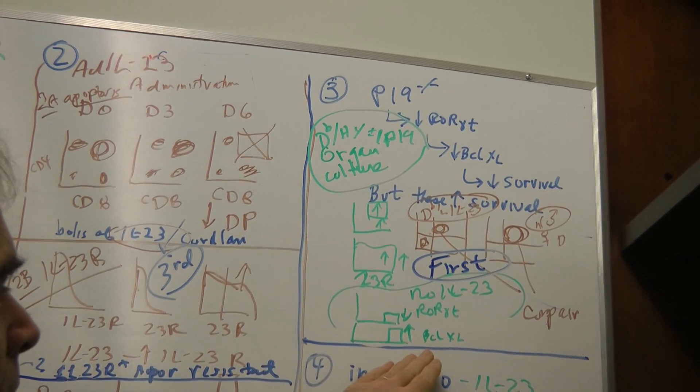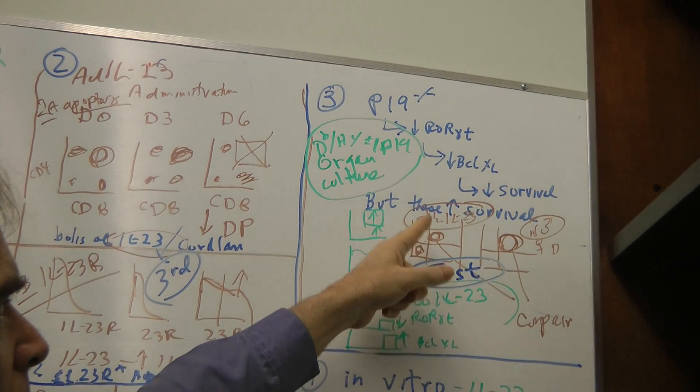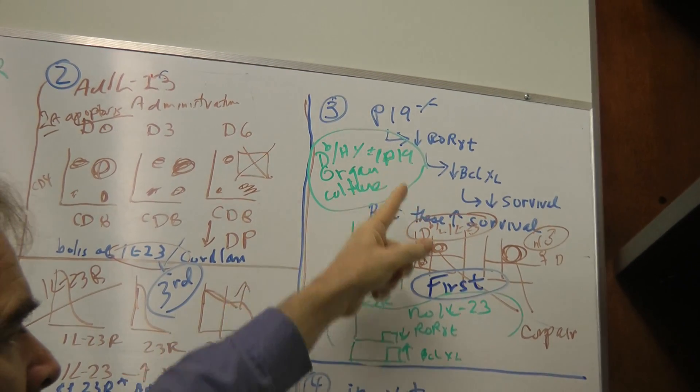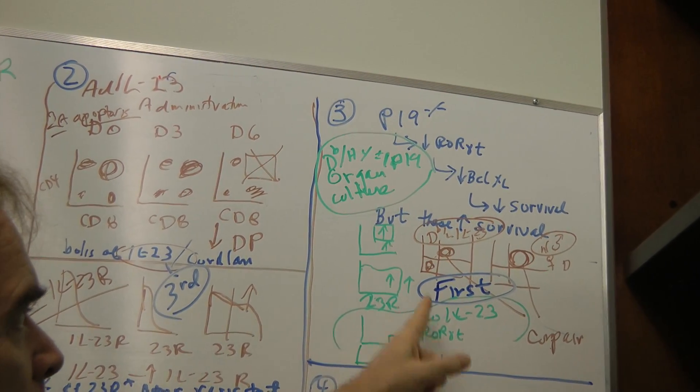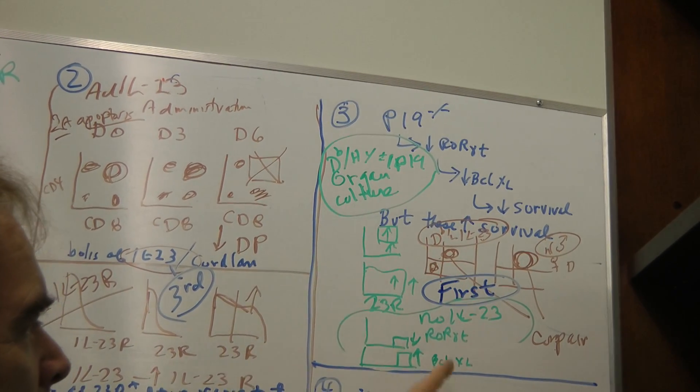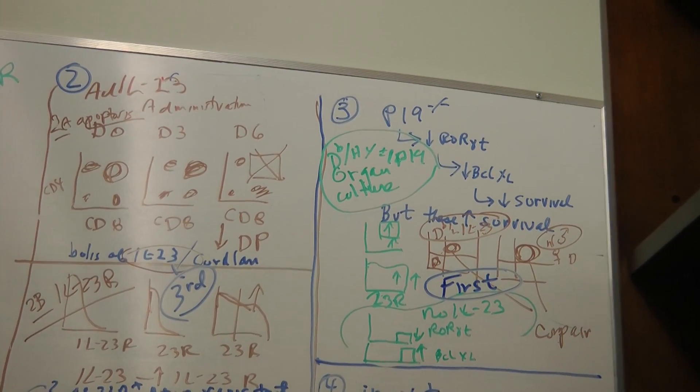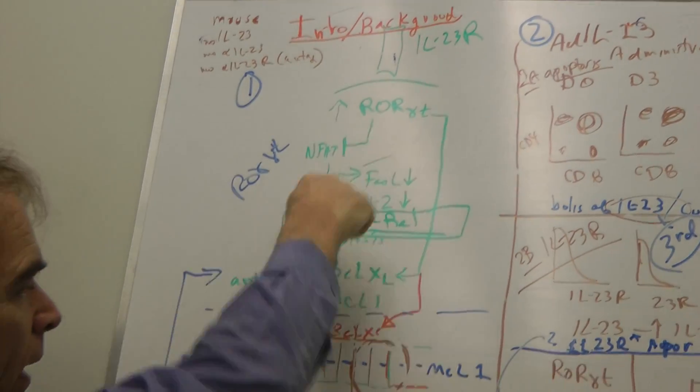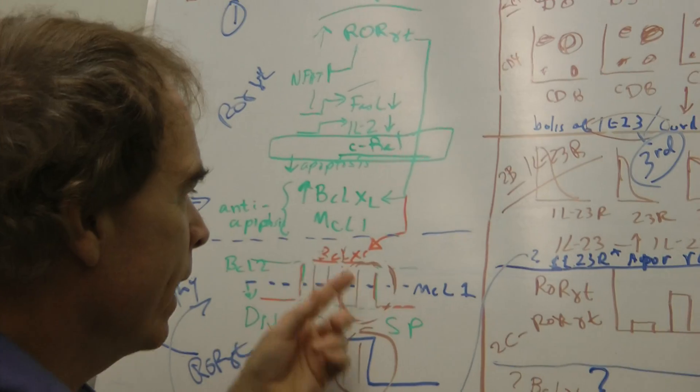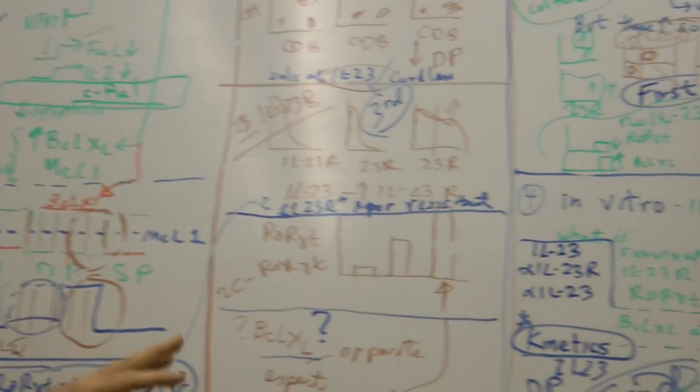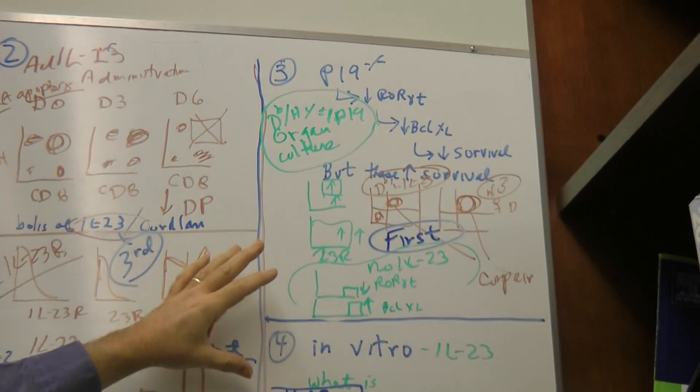So here's what actually you see is no IL-23. ROR gamma T is down. But then the data shows BCL-X is up, so that's a problem, right? Because IL-23 ROR gamma T signals BCL-X here. You can't have things that keep switching back and forth.